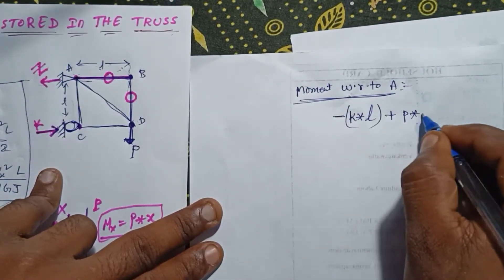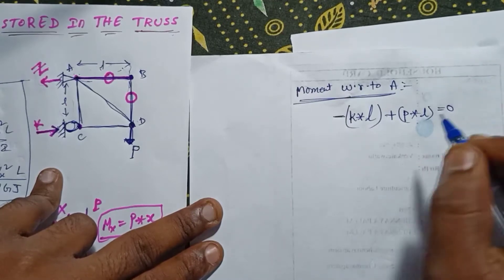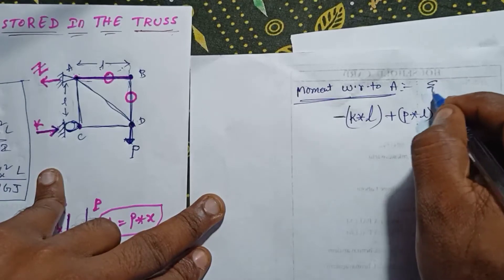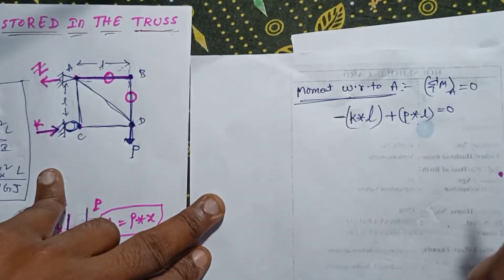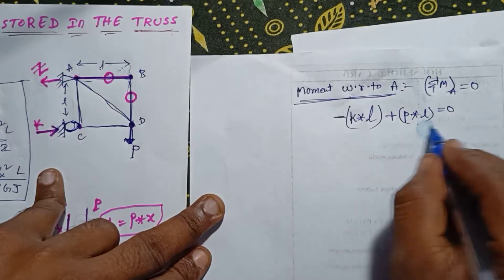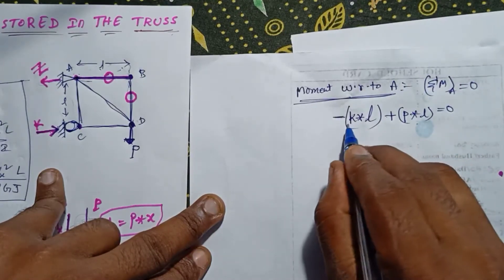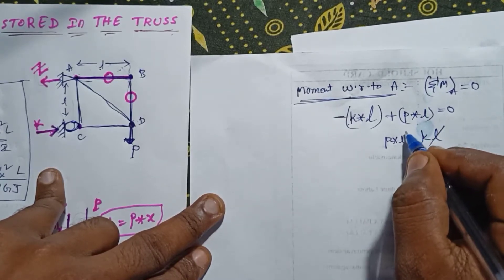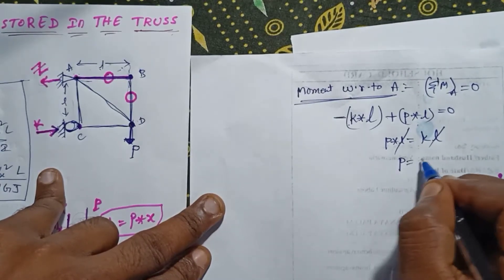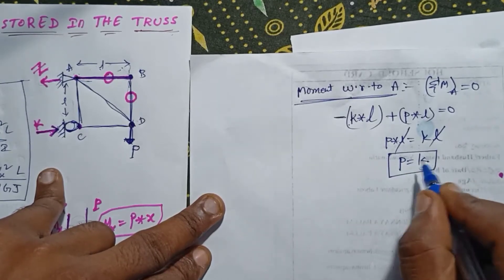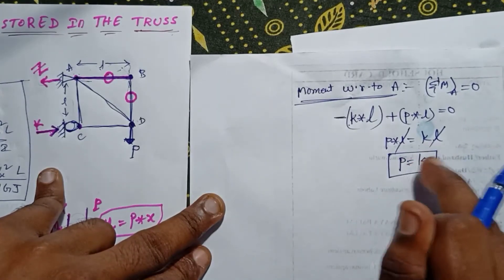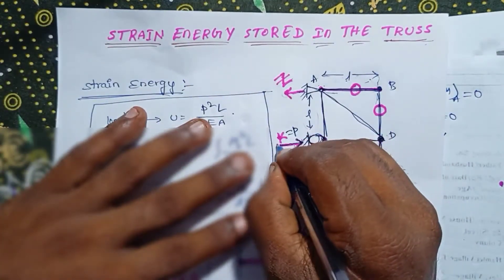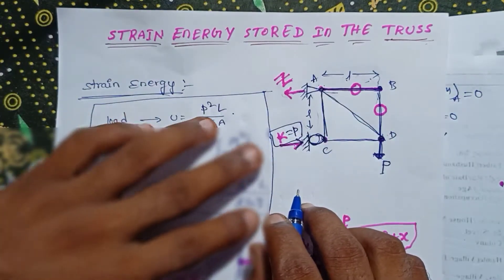From the moment equation, P into L is equal to K into L. The L cancels out, so P is equal to K, meaning K value equals P.